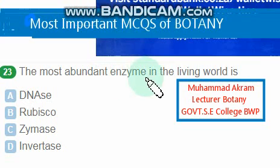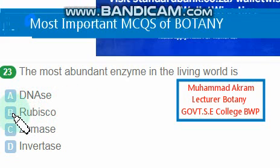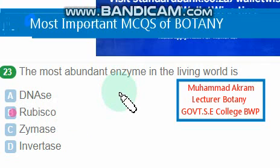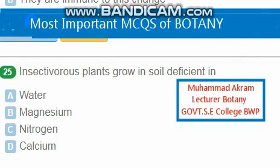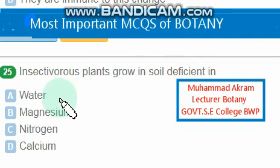The most abundant enzyme in the living world is RuBisCO — this is the right option. RuBisCO is the most abundant protein or enzyme found in the world. Insectivorous plants grow in soil deficient in nitrogen — nitrogen is the right option. This question is from the Punjab Public Service Commission Recruitment of Lecturer Botany 2017.